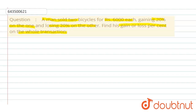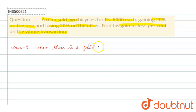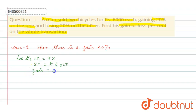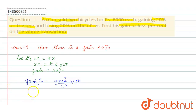First, we look at Case 1: when there is a gain of twenty percent. Let CP1 be rupees x and SP1 is rupees six thousand. Gain percent is calculated as gain upon CP into 100. So twenty percent equals gain upon x into 100.